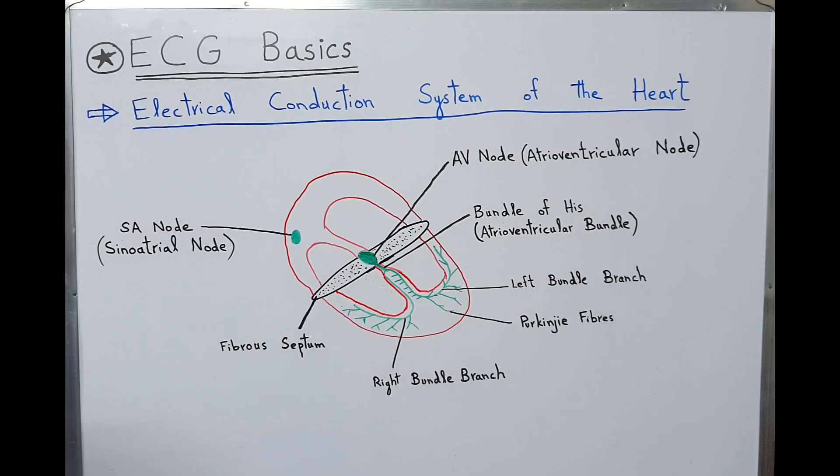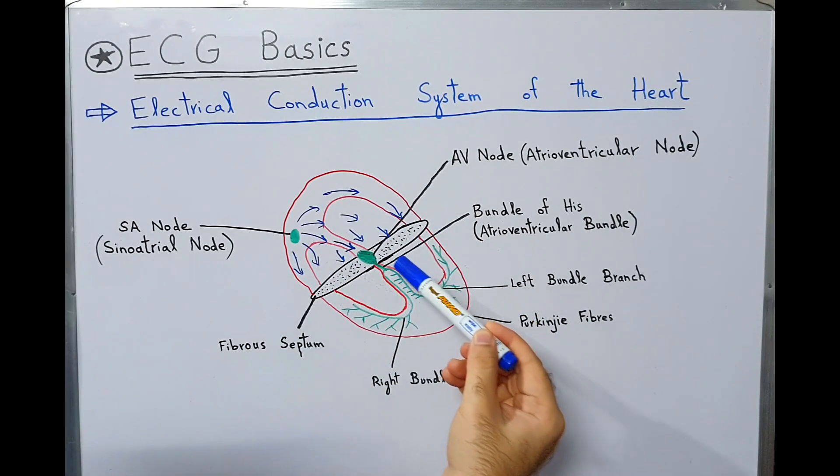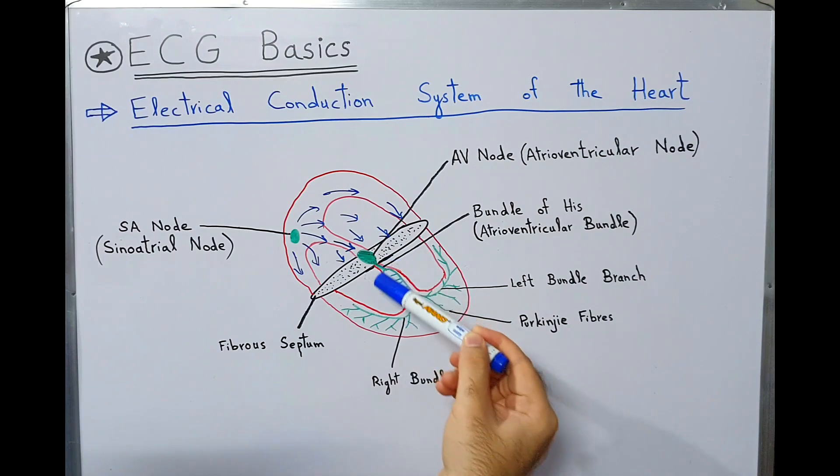So far, we have seen electrical conduction system of the heart and how electrical signals are transmitted from SA node to AV node and then to bundle of His, right and left bundle branches and Purkinje fibers.